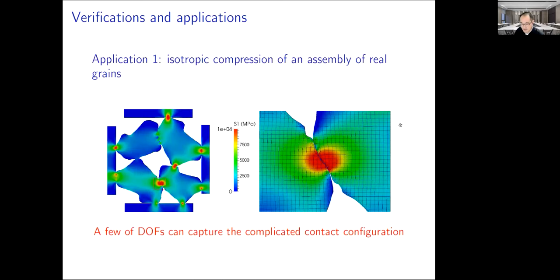Okay, let's see the results. The first application of our model is isotropic compression of an assembly of real grains. We can see that the contact is very complicated. For this potential contact reference, there are three discrete contact points rather than a continuous surface. In our model, only a few degrees of freedom are adopted and we still can successfully capture such complicated contact algorithms.